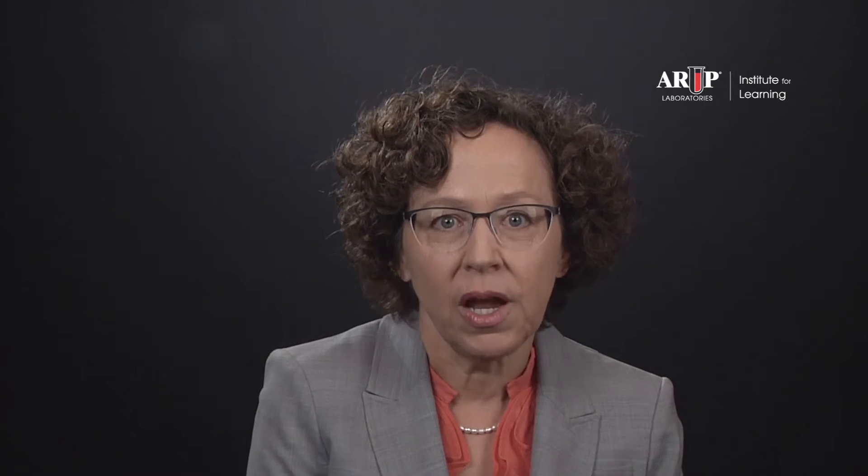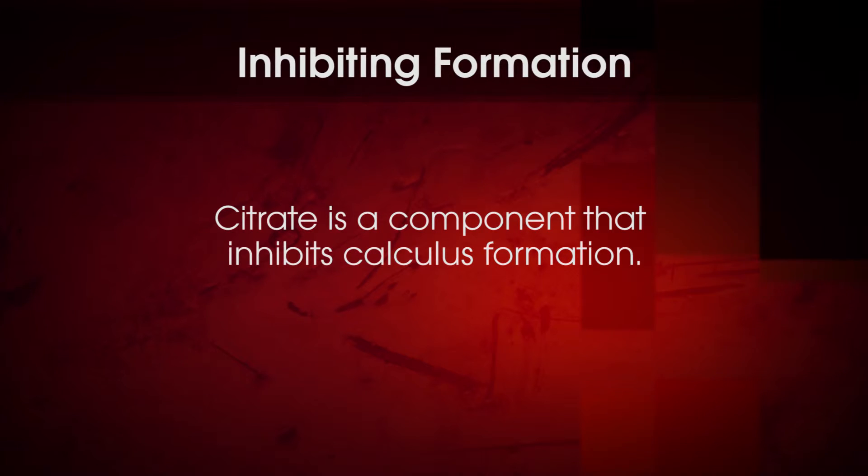Testing to evaluate excretion in 24-hour urine collections includes measurement of urine volume and pH, and quantitation of components known to promote kidney stone formation — that is, calcium, oxalate, uric acid, and sodium — as well as components that inhibit calculus formation, such as citrate. Creatinine excretion is determined as a measure of the completeness of the collection.